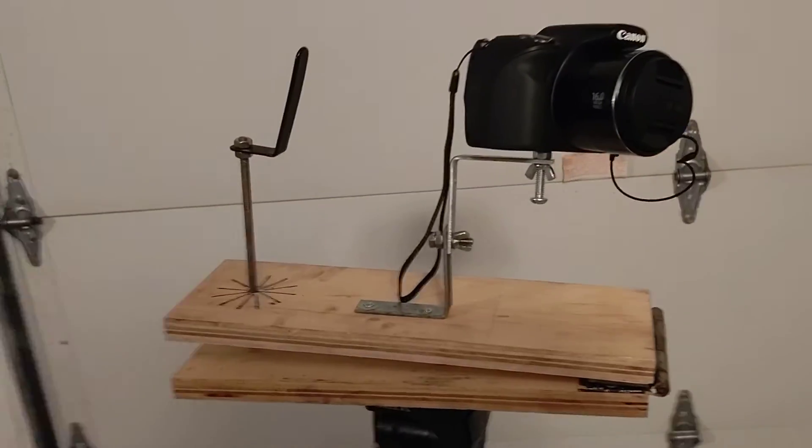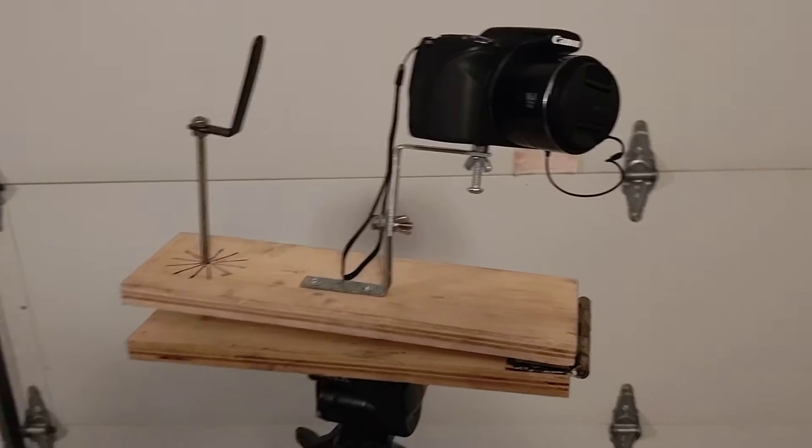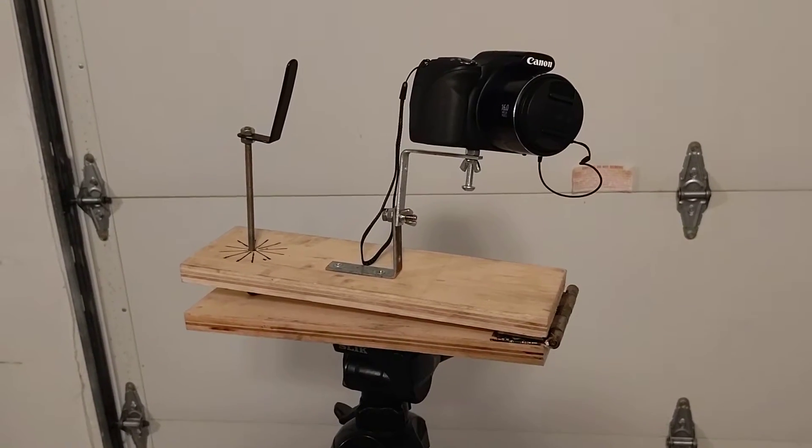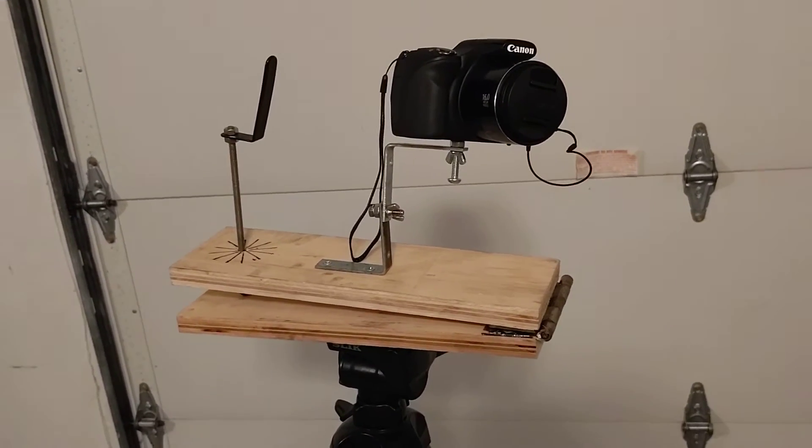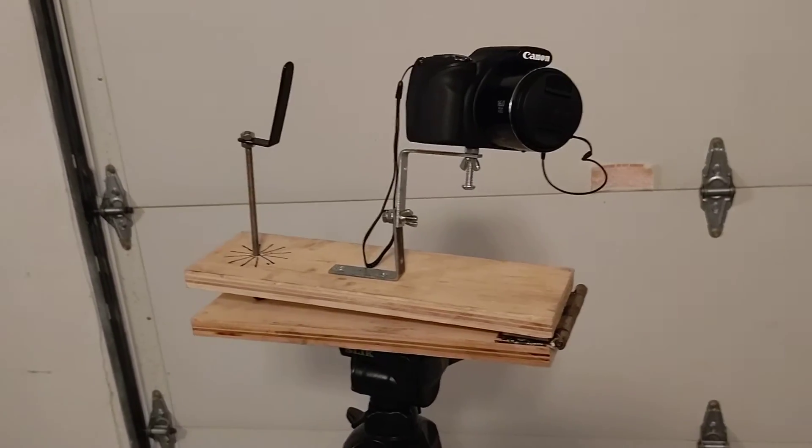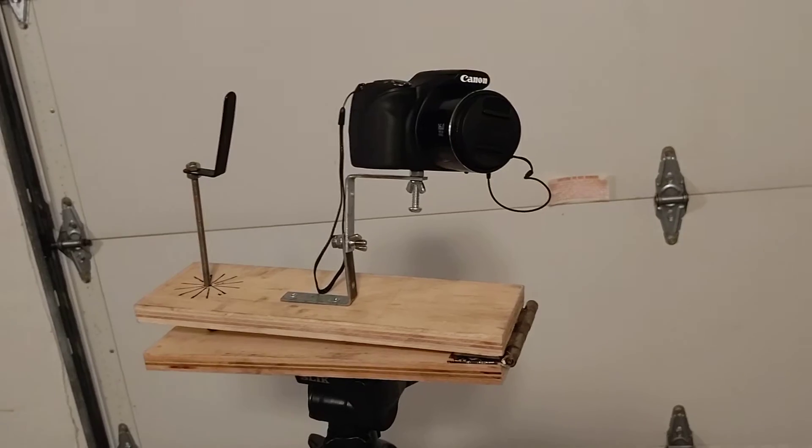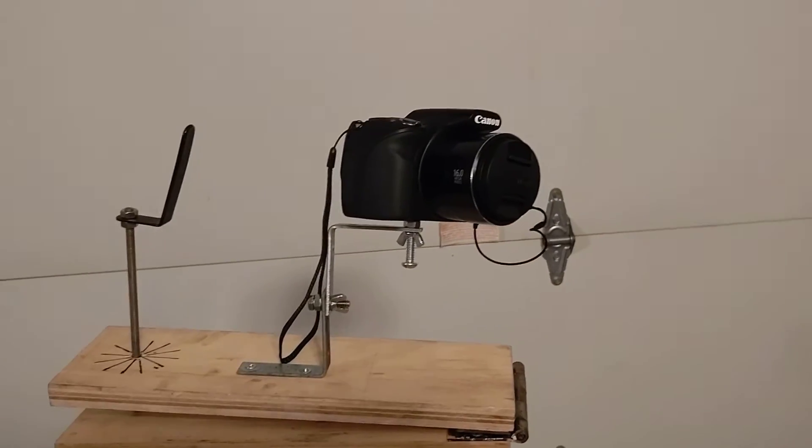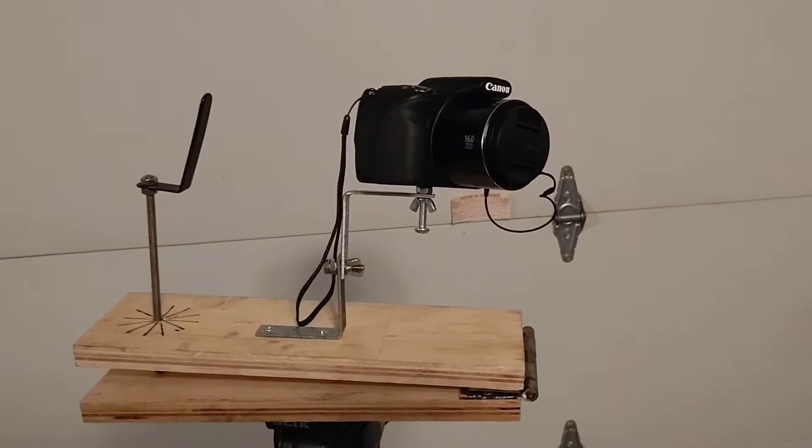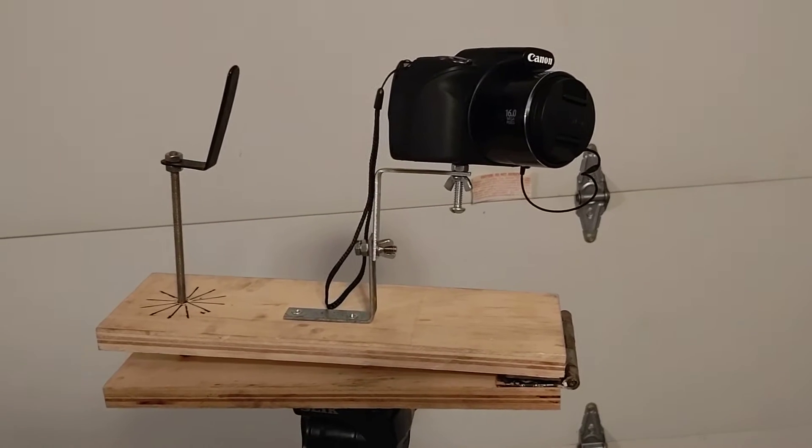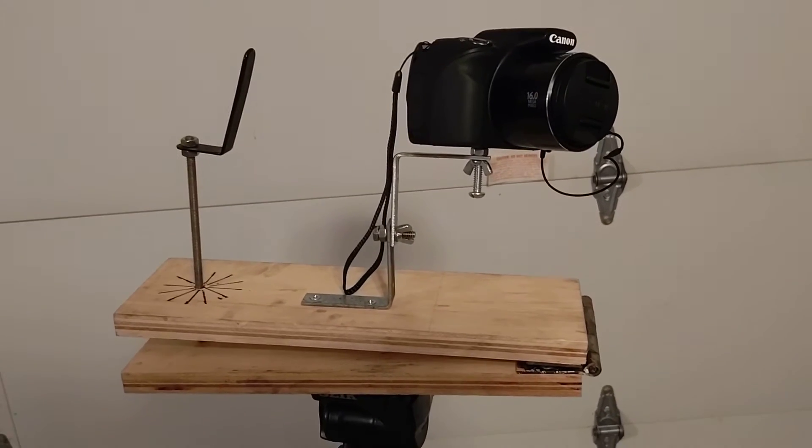So I decided to take out my tripod, barn door tracker, and camera to get some photos of the Big Dipper and stars that surround it. What I mainly want to talk about is this barn door tracker tool. You can definitely get 15 or 30 second exposures with a digital camera and capture constellations, but if you want to get more stars, you'll need a longer exposure time.